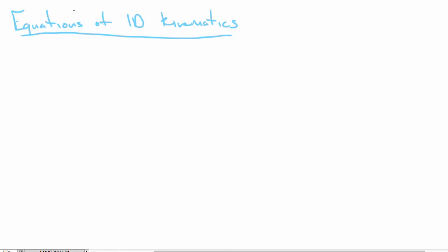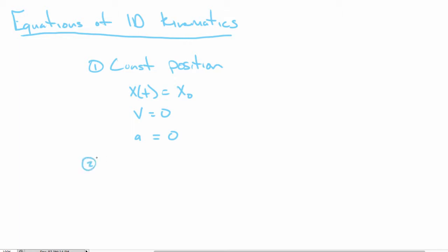We're going to deal with three types of motion when talking about kinematics. The first type is motion with a constant position. Motion with a constant position is incredibly boring and not really worth wasting our time on. If you wrote down position as a function of time, you'd say it's x naught — the position doesn't change. If the position doesn't change, the object can't have a velocity, and if it doesn't have velocity, it doesn't have acceleration. We're not actually going to talk about constant position at all.